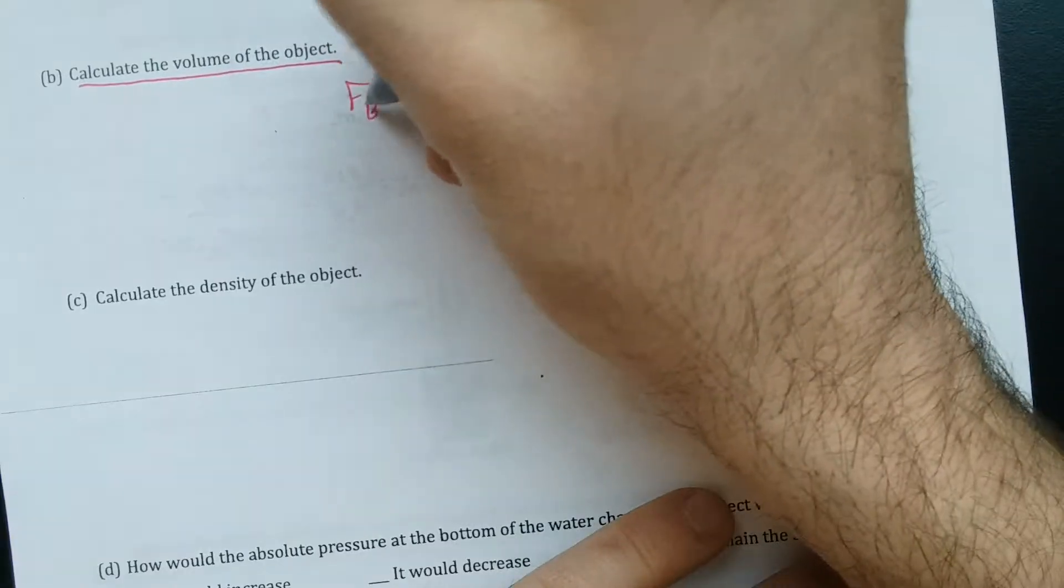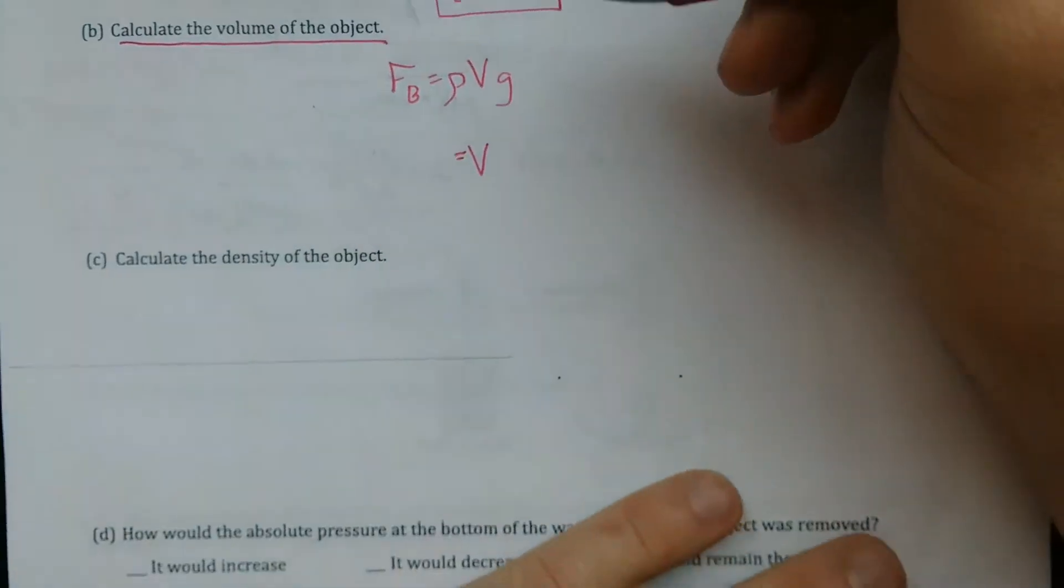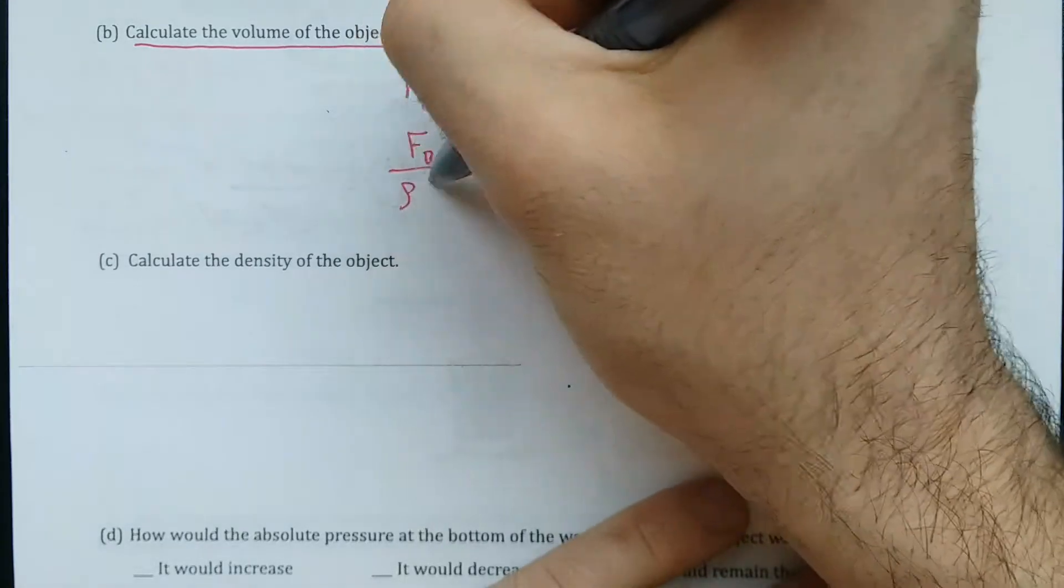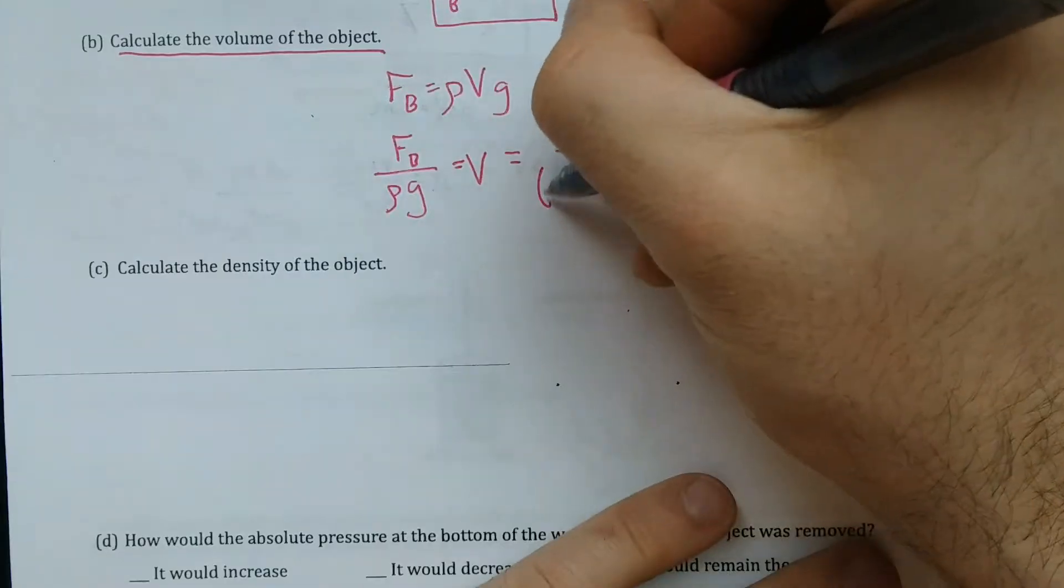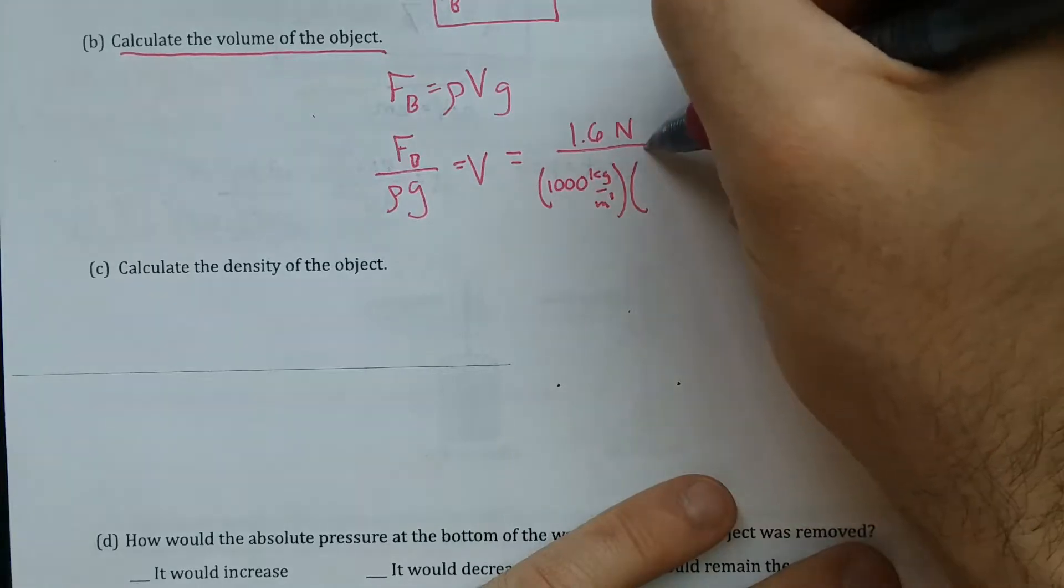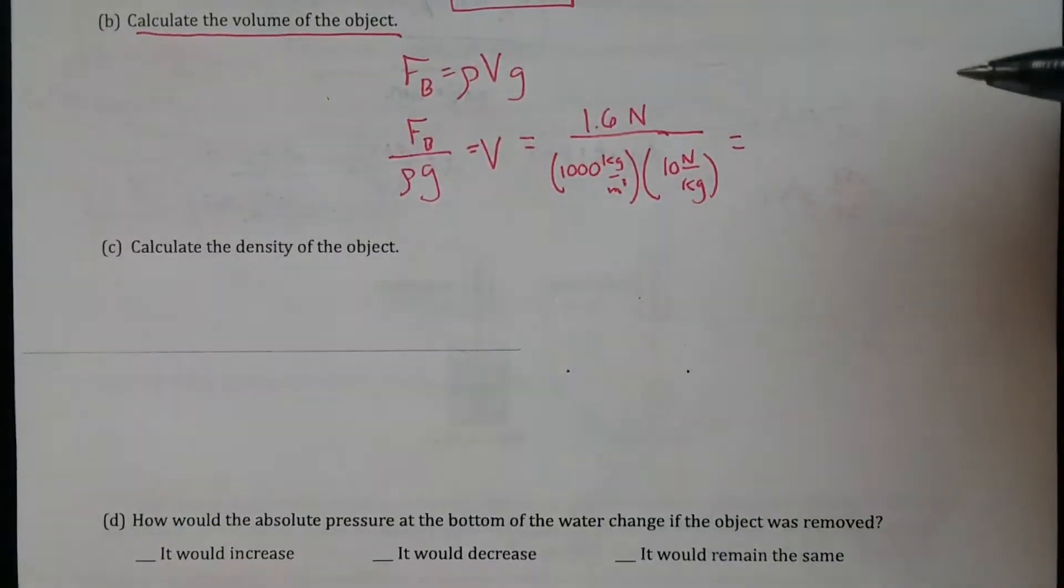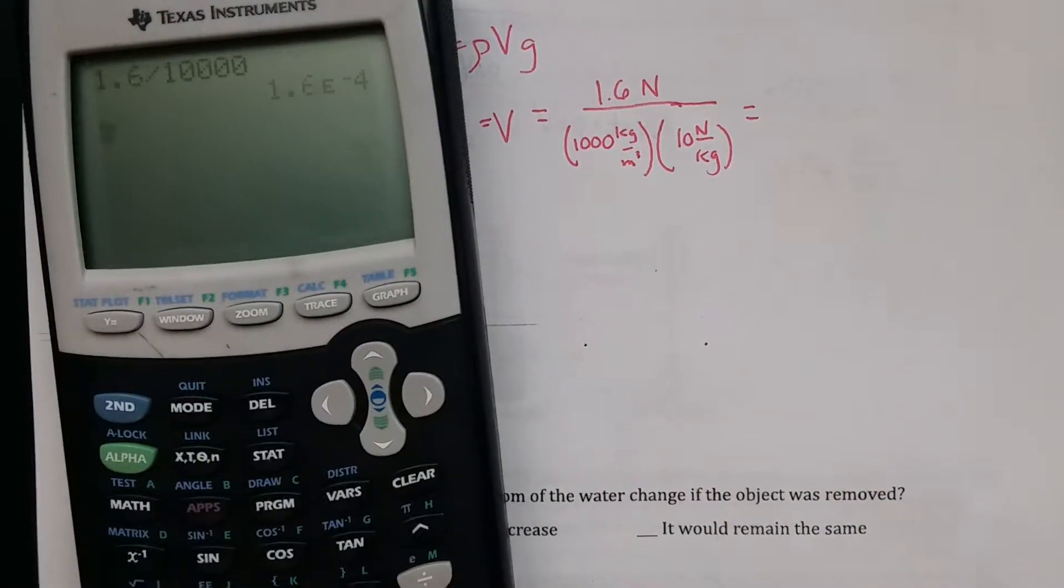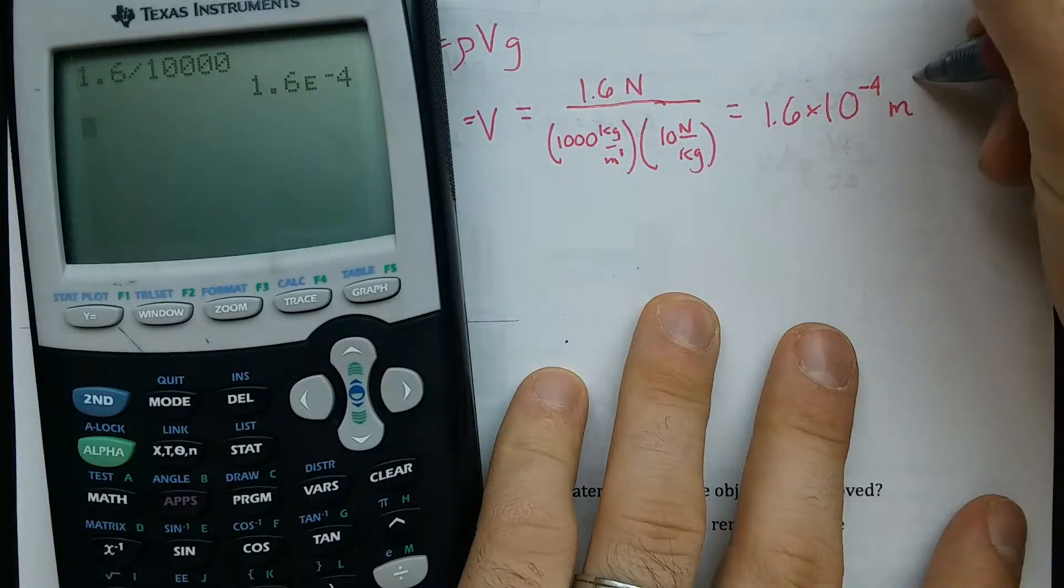Now we can use this idea of rho Vg. The volume of the object, which happens to be the volume displaced because this thing is completely underwater, equals the buoyant force over rho G. And that equals 1.6 Newtons divided by 1,000, this is water, kilograms per cubic meter, times 10 Newtons per kilogram. And that is just 1.6 divided by 10,000, or 1.6 times 10 to the negative 4 meters cubed.